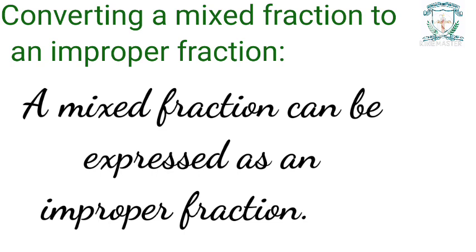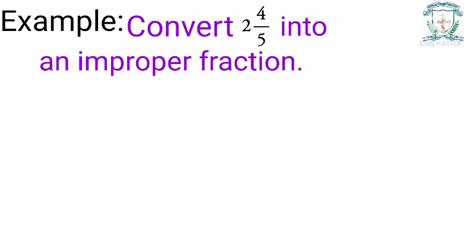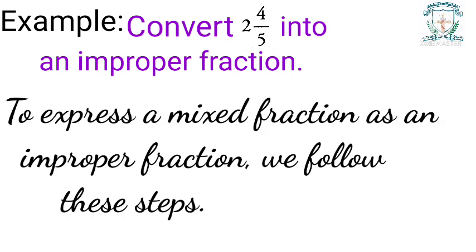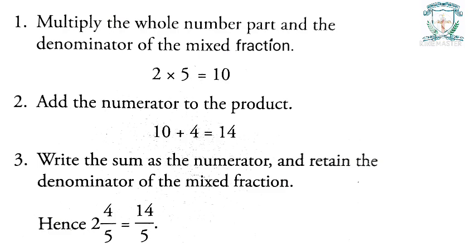Converting a mixed fraction to an improper fraction: a mixed fraction can be expressed as an improper fraction. For example, convert two and four by five into an improper fraction. To express a mixed fraction as an improper fraction, we follow these steps. Step one: multiply the whole number part and the denominator — that is, two multiplied by five equals ten.